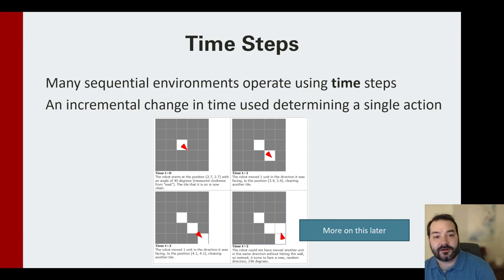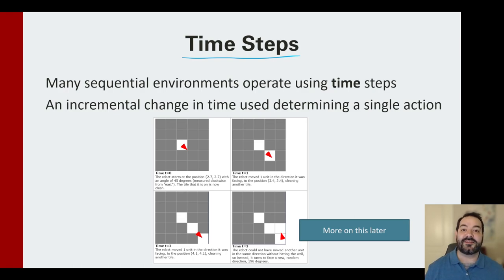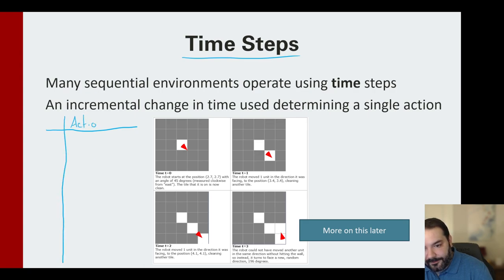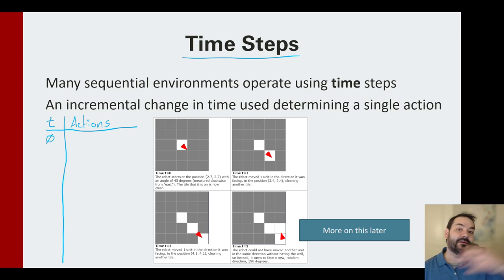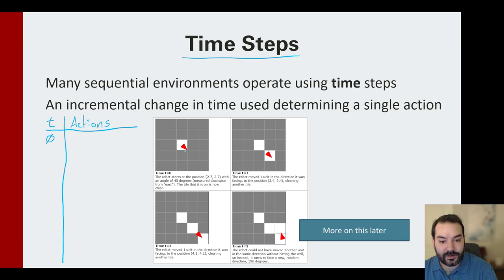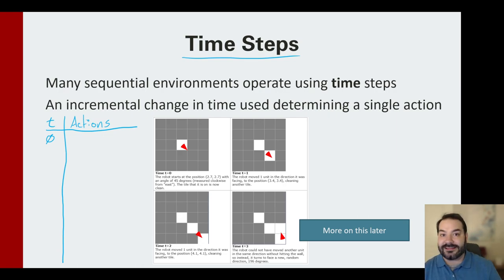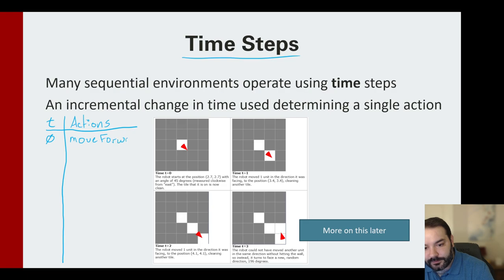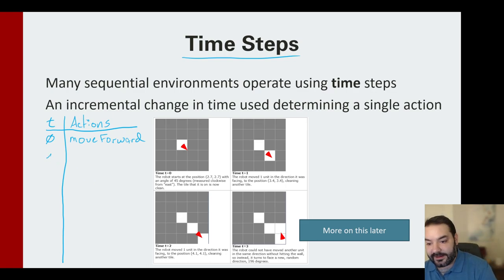That's where we get into a key term we'll be seeing a lot: the time step. If we think about actions happening by our agent, we're dealing with T. At T0, given whatever the environment is, the agent perceives its surroundings — it's facing a direction — and it wants to move forward. At T0: move forward. That action occurs, the environment is updated, and we are now at T1.